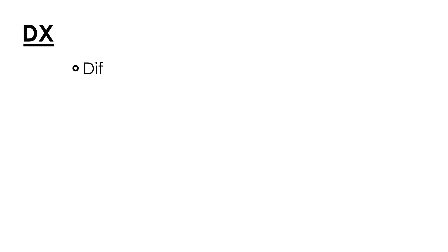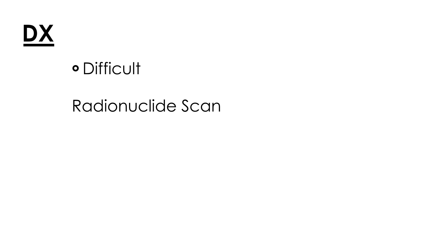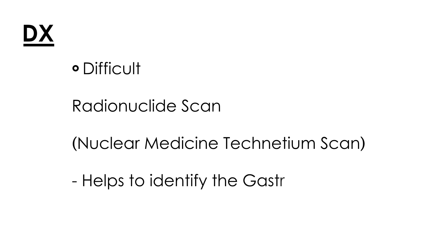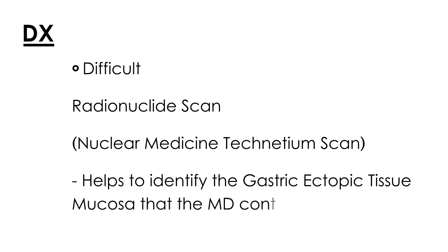Diagnosis is actually rather difficult because it mimics appendicitis and is very vague in nature. But the key diagnostic study is a radionuclide scan, also called a nuclear medicine technetium scan. This scan is very specific because it helps identify the ectopic gastric tissue that Meckel's diverticulum contains, making it a very unique and specific test.